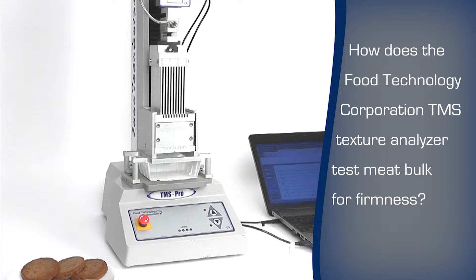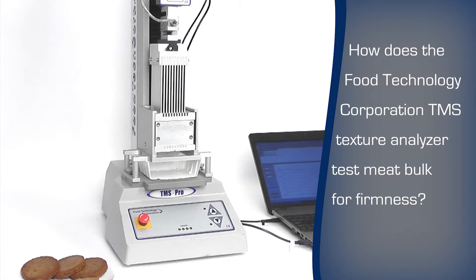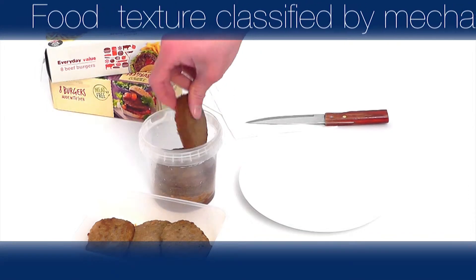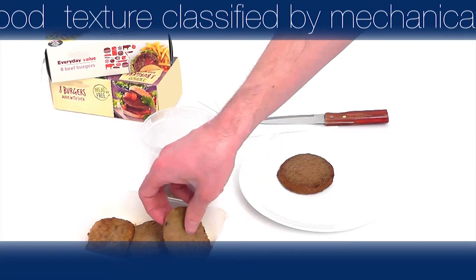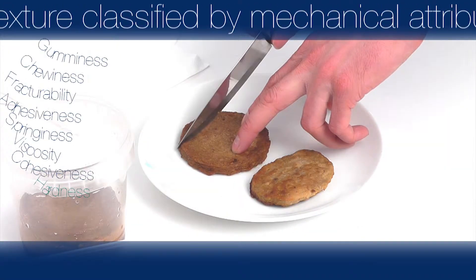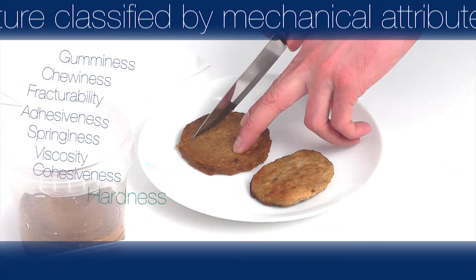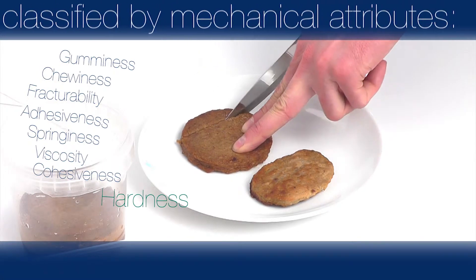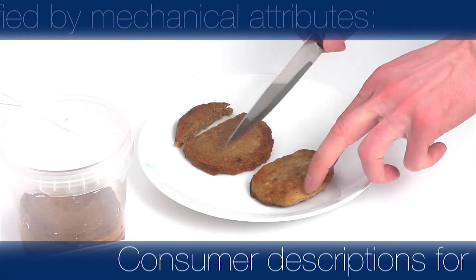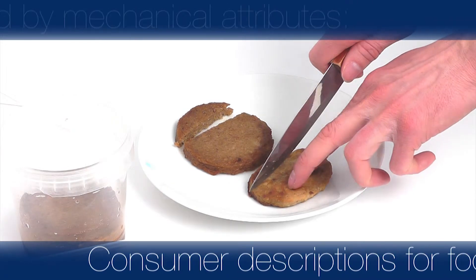The FTC texture analyser can test a burger for consistency of firmness and directly compare a vegetable-based alternative to the classic hamburger. Food texture can be scientifically classified by a number of mechanical attributes: hardness, cohesiveness, viscosity, springiness, adhesiveness, fracturability, chewiness and gumminess.